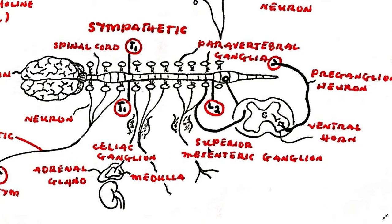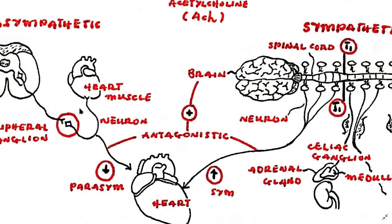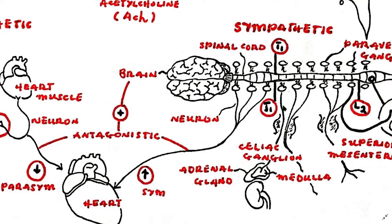Sympathetic postganglionic neurons are therefore generally long, whereas the parasympathetic neurons are generally short. An exception is the sympathetic innervation of the adrenal gland, where preganglionic neurons directly innervate the adrenal medulla.